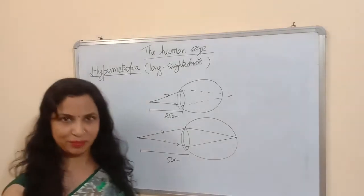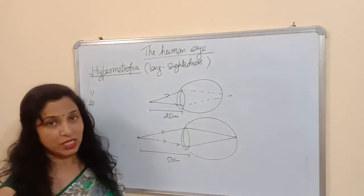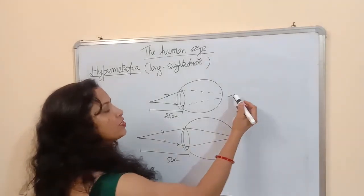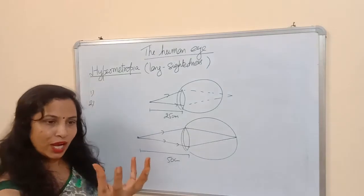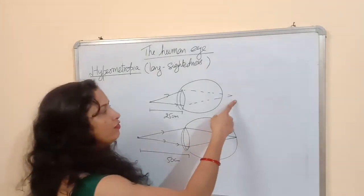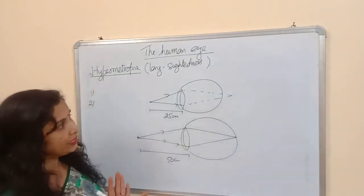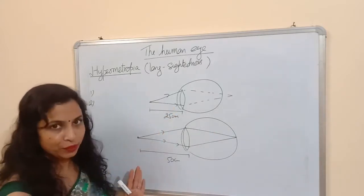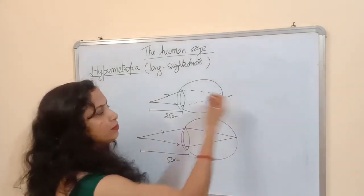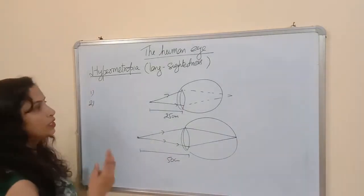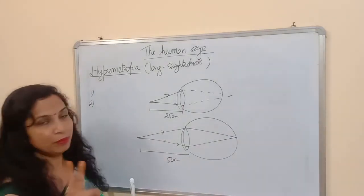The second cause of hypermetropia can be that the eyeball becomes short. If the eyeball becomes shorter, the retina moves closer to the lens compared to its initial position, causing the image to form behind the retina. These are the two causes of hypermetropia.